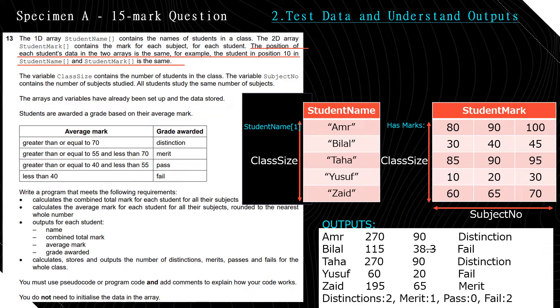So we have four outputs that are happening for each student. And finally, calculates, stores, and outputs a number of distinctions, merits, passes, and fails for the whole class.